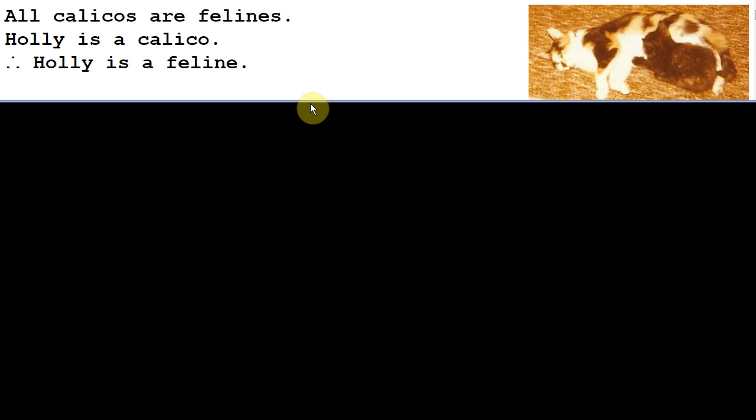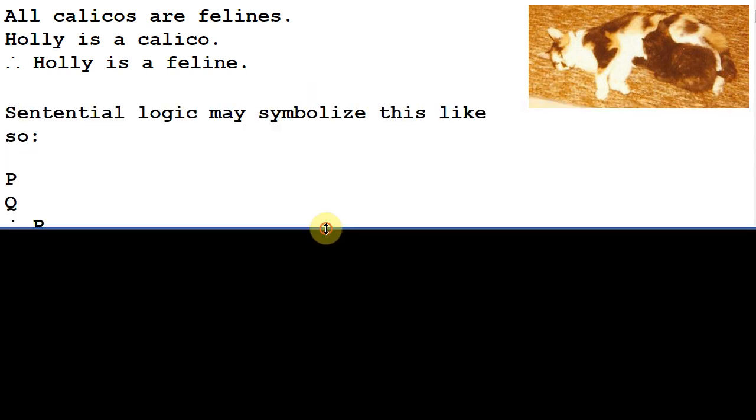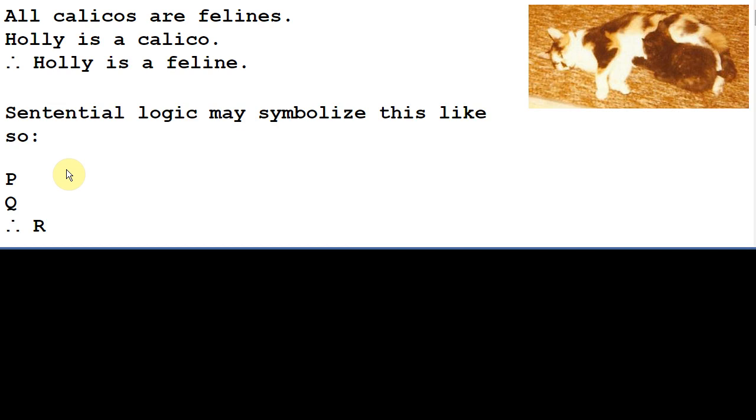But using sentential logic, we don't have any way to show its validity. Here's how we would symbolize it in sentential logic. We'd perhaps represent the first sentence as P, the second as Q, the third as R. And sentential logic doesn't give us any way to derive R from P and Q. Yet this is a valid argument, and we can prove it's valid by symbolizing the actual content of our sentences and then using the new rule of universal instantiation.